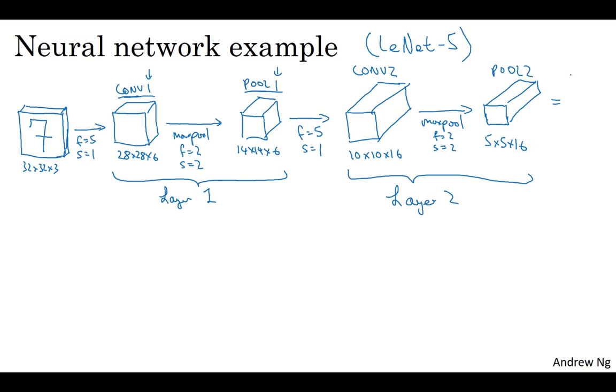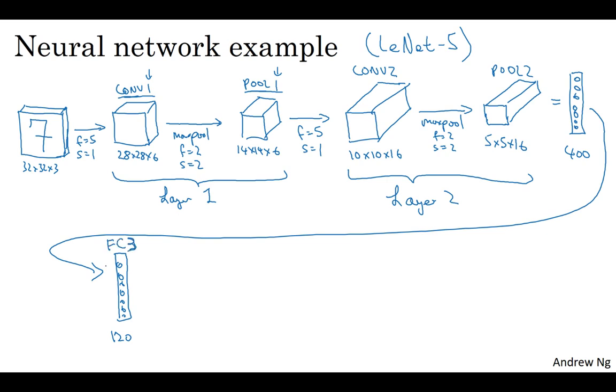So let's now flatten our pool 2 into a 400 by 1 dimensional vector. So think of this as flattening this out into just a set of neurons. And what we're going to do is then take this 400 units and let's build the next layer as having 120 units. So this is actually our first fully connected layer. I'm going to call this FC3 because we have 400 units densely connected to 120 units.